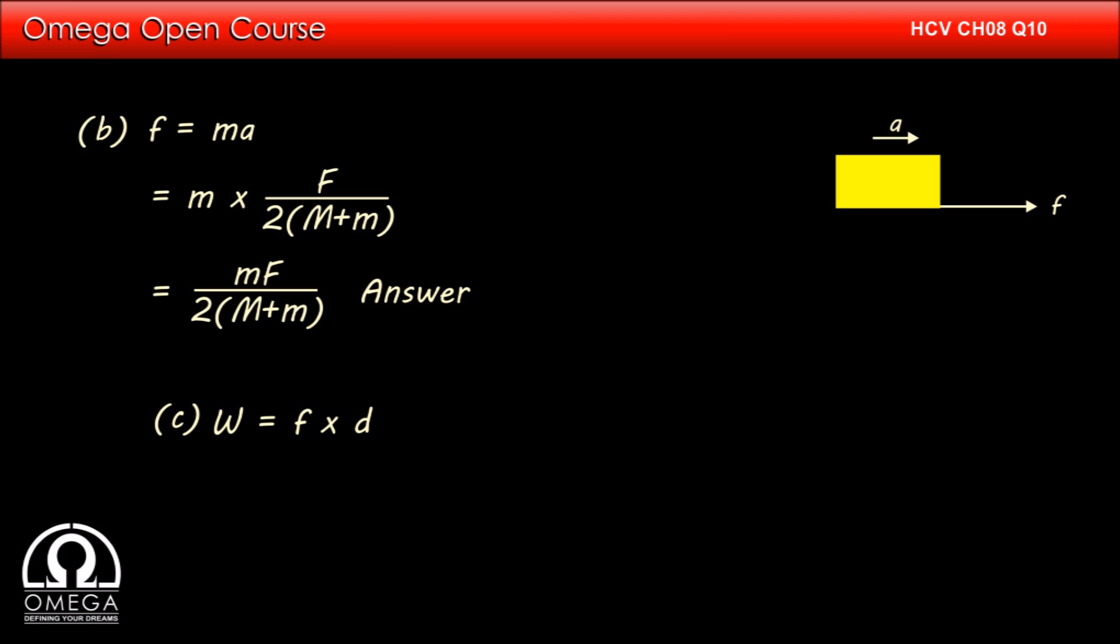The force applied by the lower block on the upper block in horizontal direction is friction, and because of that friction, the upper block moves by distance D in horizontal direction. Therefore, the work done by the lower block on the upper block is friction force into D, that is mFD divided by 2 into capital M plus m. This is the answer to part C of the question.